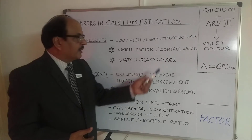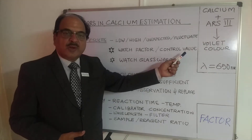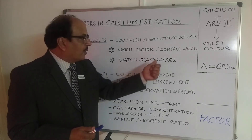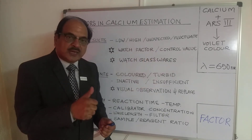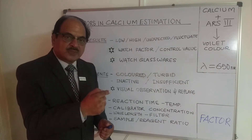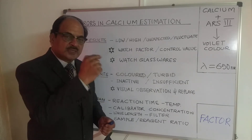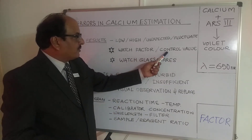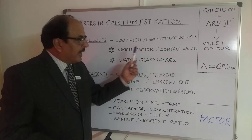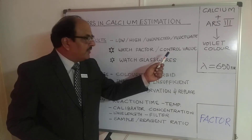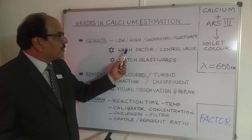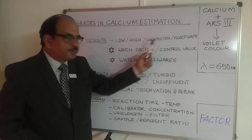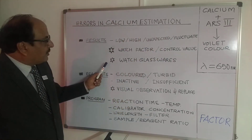You need to see that the factor remains constant throughout your assay. If there is any deviation, you need to recalibrate. Additionally, run a control serum whose value is known to you, and ensure that the calibrator or control values are lot-specific — referred to by the lot number. If both the factor and the control serum are taken care of, most high or low result errors can be eliminated.